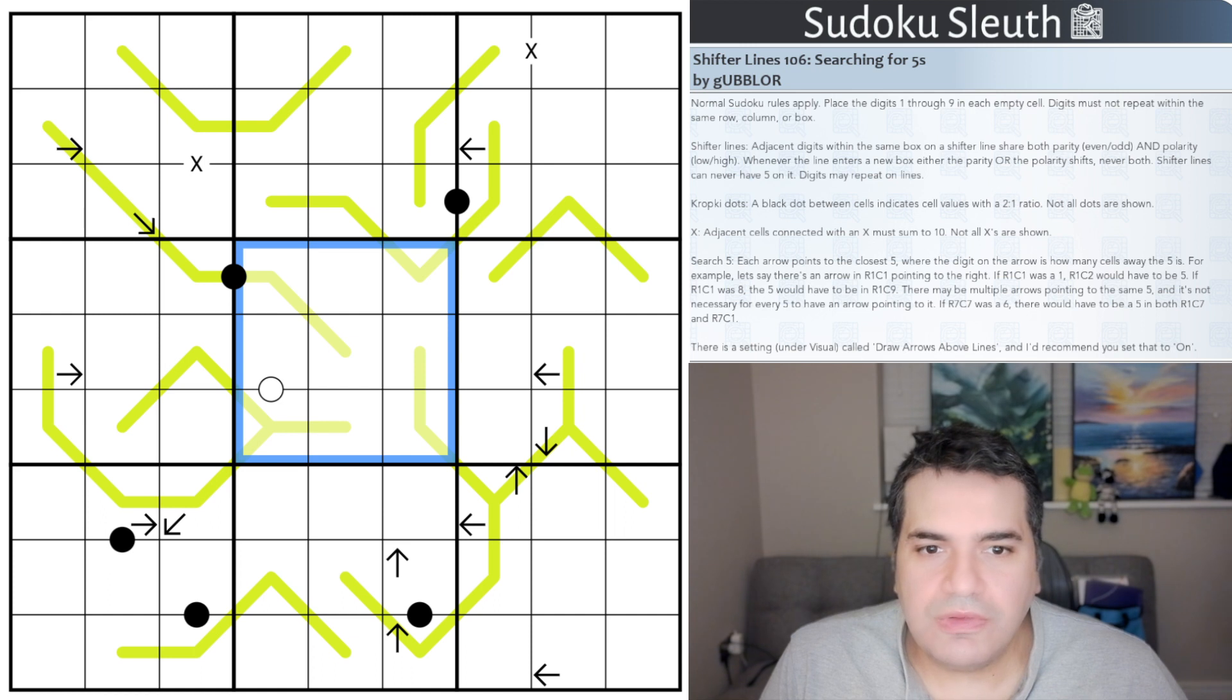Then we have the shifter lines. So adjacent digits within the same box on a shifter line need to share both parity, as in even slash odd, and polarity, as in low slash high. So for example, if this number here is, if this cell here is a one, this has to be the same parity and polarity, meaning it's an odd low digit, there's only one of these, it is a three.